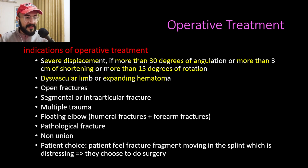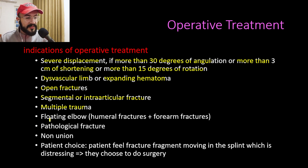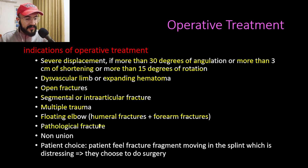Further indications for operative treatment include a dysvascular limb or expanding hematoma indicating brachial artery injury, open fractures, segmental or intra-articular fractures, multiple trauma, floating elbow (humeral shaft fracture combined with a forearm fracture), pathological fracture, non-union, and patient choice when the patient finds the moving fracture fragment distressing.